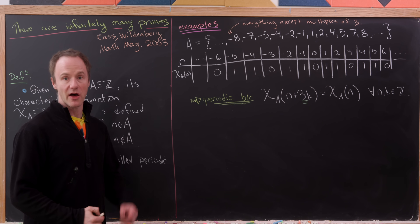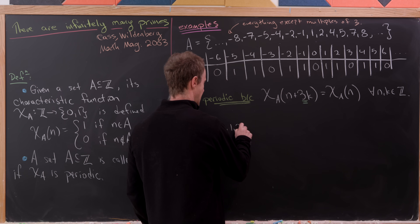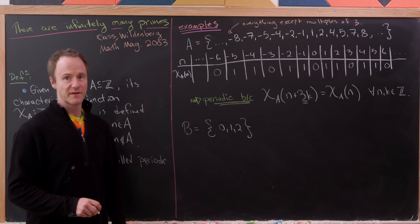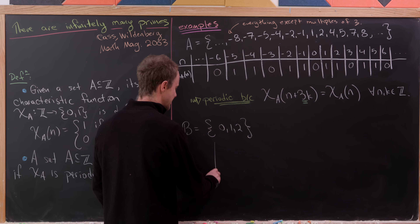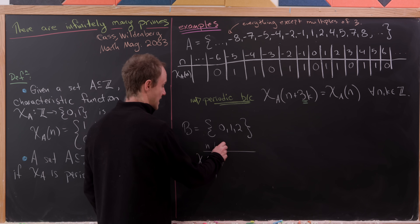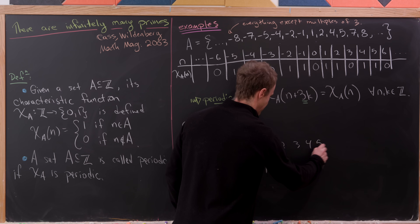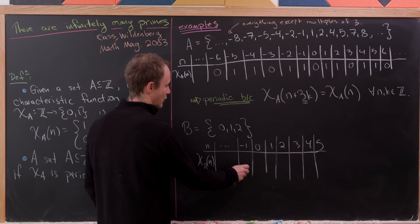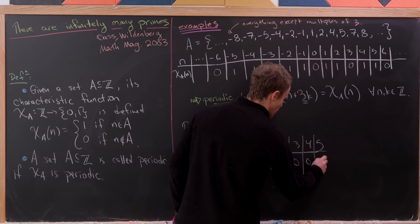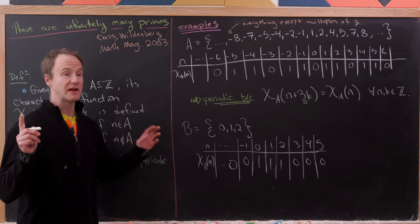Let's look at another example. Let's say that B is a finite set — maybe the finite set containing 0, 1, and 2, though really any non-empty finite set works. Now observe that this is most definitely not periodic. We could make a chart: plugging in negative 1 gives 0 because that's not an element. 0, 1, and 2 are elements so we get three 1s in a row. After that it's just all 0s, and before that it's also all 0s. This is pretty clearly not periodic.